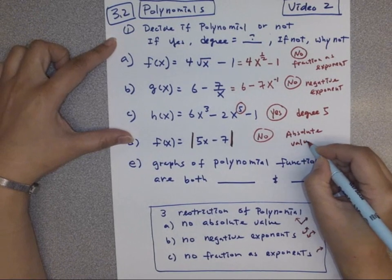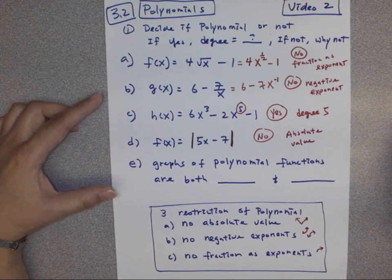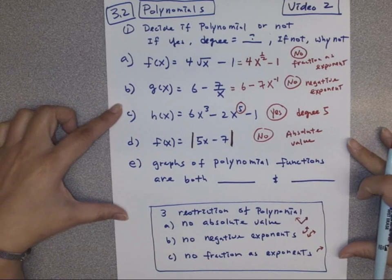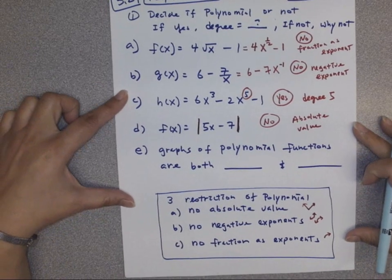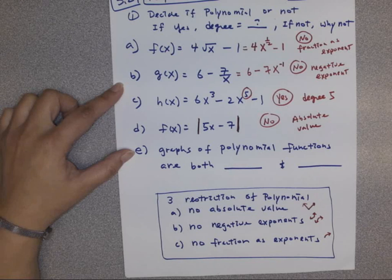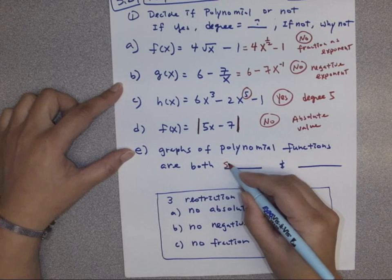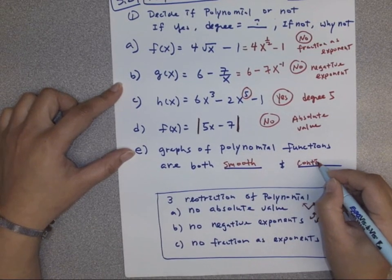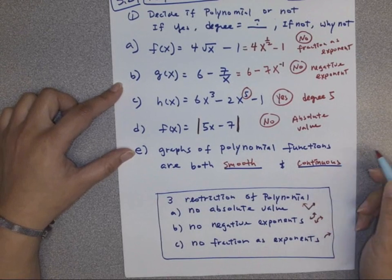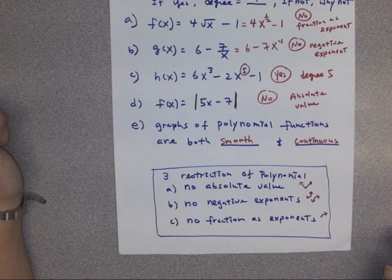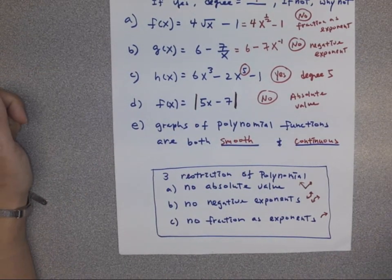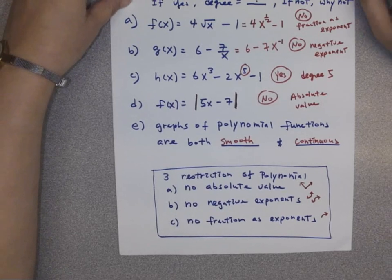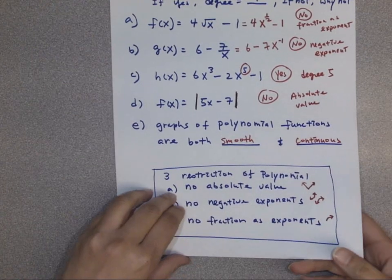These are good practice — write down the question and try first, then check how the answer looks. The graph of polynomial functions needs to be both smooth and continuous, and that's why we have those three restrictions. Hopefully you're okay with that. These are the types of questions from section 3.2.